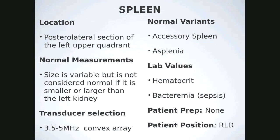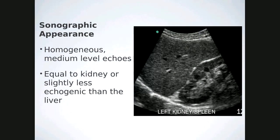Transducer selection: 3.5 to 5 megahertz to begin, highest frequency possible. Variants include accessory spleen; patients may also be born without a spleen — asplenia. Lab values specific to the spleen aren't common, but we always look at hematocrit if there's a bleed and check for sepsis. Patient prep: there is none. Patient position: anything goes as long as you document the position on the films. Sonographically it should be homogeneous, medium-level echoes, equal to the kidney or slightly less echogenic than the liver.